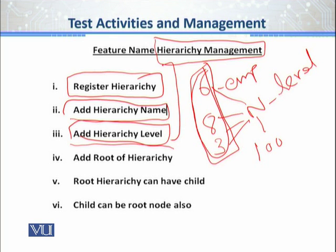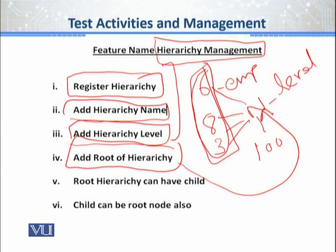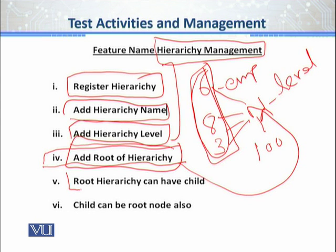Look at step number 4: add root to the hierarchy. This is the crux of n-level. For example, if I am adding level number 2, then root 1. If I am adding level number 3, then root 2, root 1. So it forms a sort of a tree. Root defines the hierarchy, and this is a very big task.